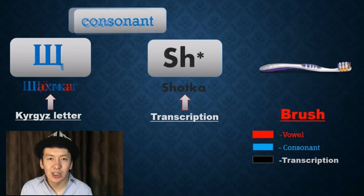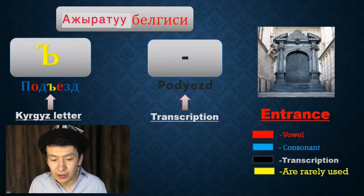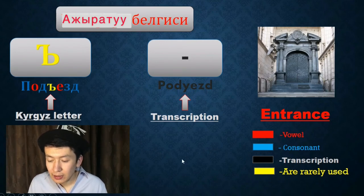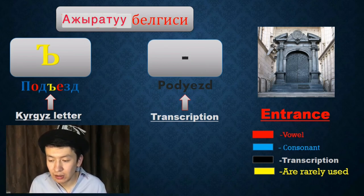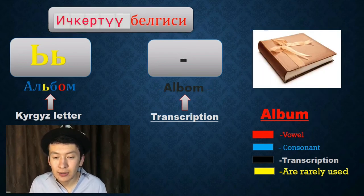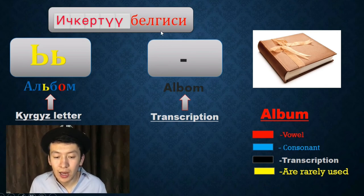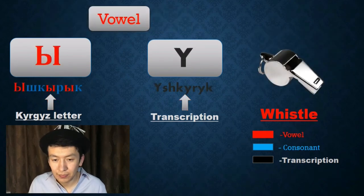This letter is called 'ajratu belgesi' — the hard sign. It helps the word become solid. For example: padiest — entrance. The next letter is called 'ičkertu belgesi' — the soft sign. It helps the word become soft. For example: albom — album.